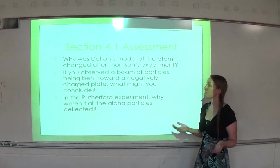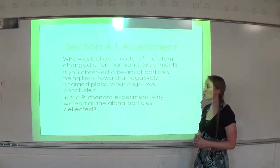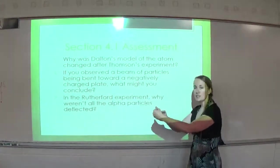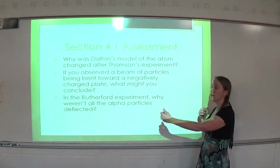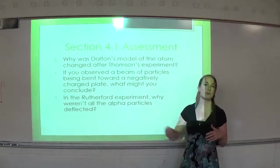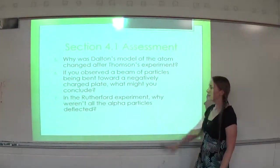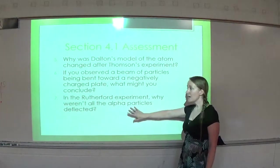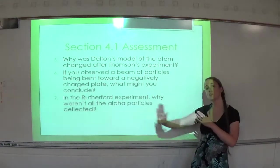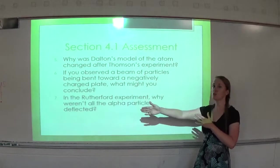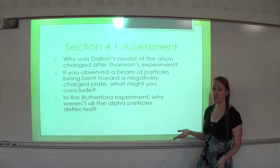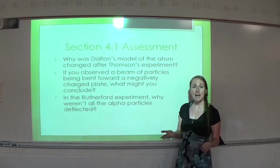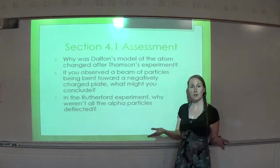Question seven: in the Rutherford experiment, why weren't all the alpha particles deflected? Some hit the nucleus and bounced backwards, but a lot of them just passed straight through the electron cloud. Since most of the atom is empty space, the ones that passed through the electron cloud did not deflect in any way. Hopefully now you understand a little bit more about the history of the atom and how we determined what the different parts were.